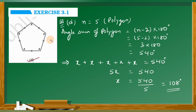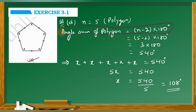Next question is question number d. This figure has 5 sides: 1, 2, 3, 4, 5 — so it is a pentagon. This is a regular polygon, meaning all sides and all angles are equal. Using the angle sum formula: (n minus 2) into 180, with n equals 5, we get (5 minus 2) into 180 equals 3 into 180 equals 540 degrees.